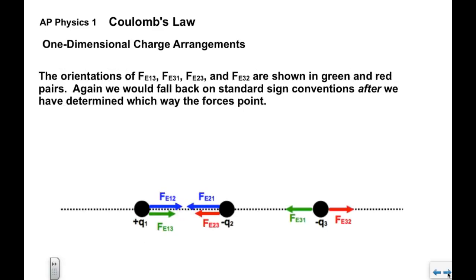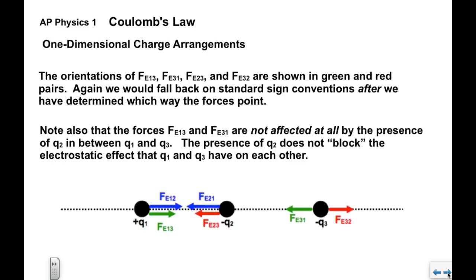For Fe13 and Fe31, shown in green, Q1 and Q3 are unlike, so they attract — the force is inward. Fe13 is to the right (positive) and Fe31 is to the left (negative). For Fe23 and Fe32, shown in red, these charges are like, so their force is repulsive and points outward. Fe23 is to the left (negative) and Fe32 is to the right (positive). Note that Q1 and Q3 are not affected at all by Q2 between them — Q2 doesn't block the electrostatic effect. When treating 1 and 3, we ignore 2; when treating 2 and 3, we ignore 1.